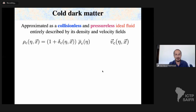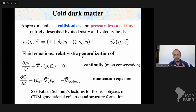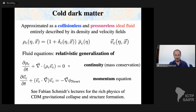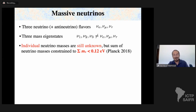Cold dark matter, which I won't discuss in much detail here (that is Fabian Schmidt's topic), is approximated as a collisionless, pressureless ideal fluid described entirely by its density and velocity fields. It obeys a continuity equation (mass conservation) and a momentum equation (Newton's law with gravitational source). The relativistic generalizations have essentially the same form. The rich physics of CDM gravitational collapse in the non-linear universe will be covered in Fabian's lectures.